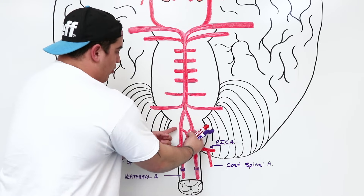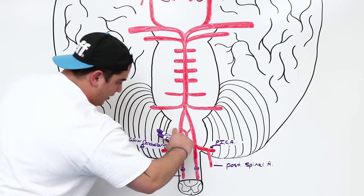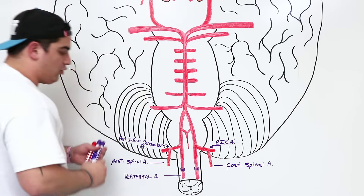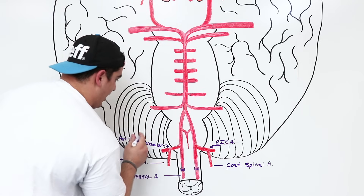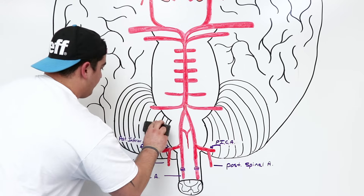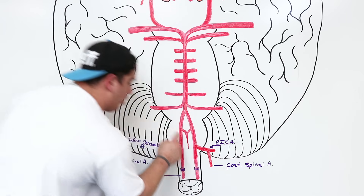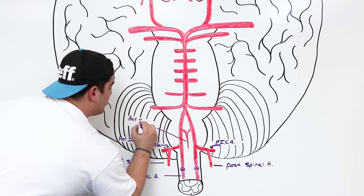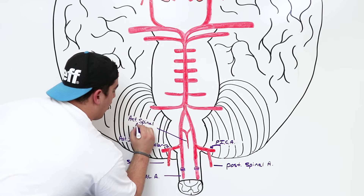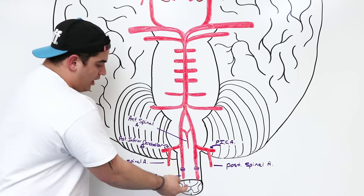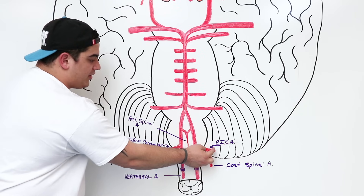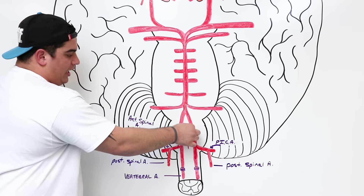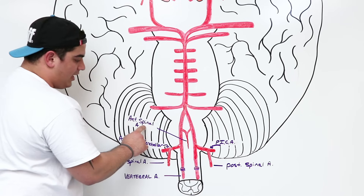As the vertebral arteries continue upward, they give off branches on each side that fuse together to form the anterior spinal artery, which runs all the way down the spinal cord. So: vertebral arteries → posterior inferior cerebellar arteries → posterior spinal arteries; and separately, vertebral arteries give off branches that fuse into the anterior spinal artery.